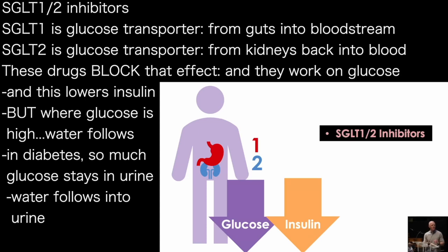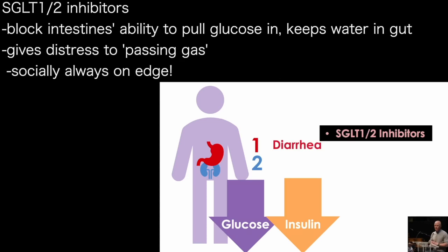But there are consequences. If you block the intestine's ability to pull glucose in, you keep a lot of water in the guts as well. And now any time the person thinks they're going to politely pass gas, they don't know what's going to come out. They're socially always on edge.